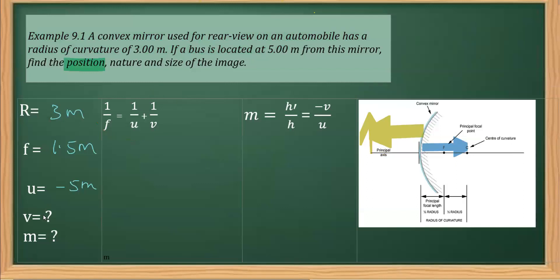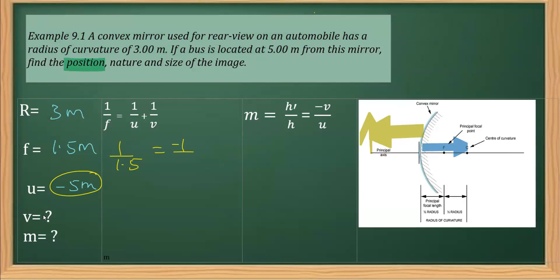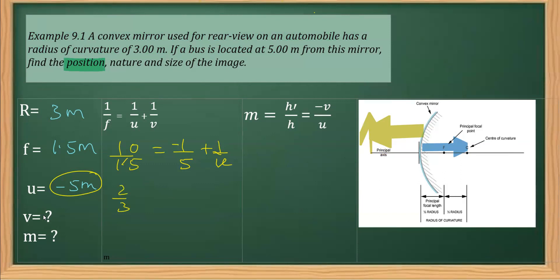We are going to apply the mirror formula to find v, the distance of the image. Replacing f with 1.5 and u with −5, we substitute into 1/v + 1/u = 1/f. Removing the decimal, 1/f becomes 2/3. Transposing −1/5 to the left side makes it positive, giving 2/3 + 1/5 on the left, which equals 1/v.